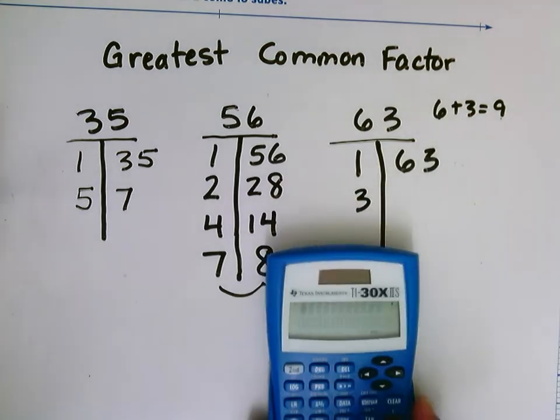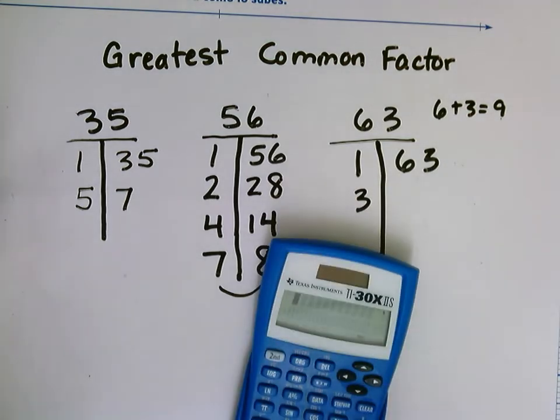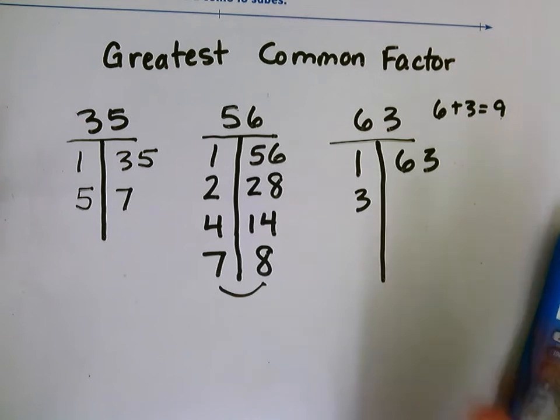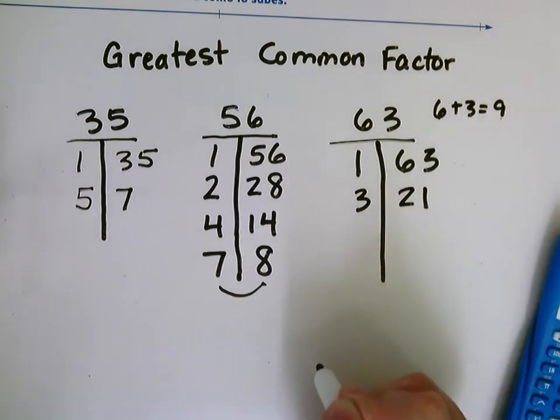3 times what? Again, I'm fine with you using your calculator for this part. 63 divided by 3 equals 21. 3 and 21.